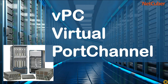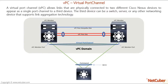Welcome to another lab node session. In this session we are going to discuss virtual port channel. A virtual port channel allows links that are physically connected to two different Cisco Nexus devices to appear as a single port channel to a third device. The third device can be a switch, server, or any other networking device that supports link aggregation technology.